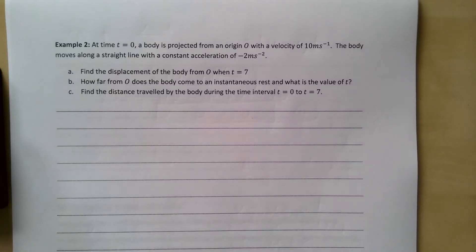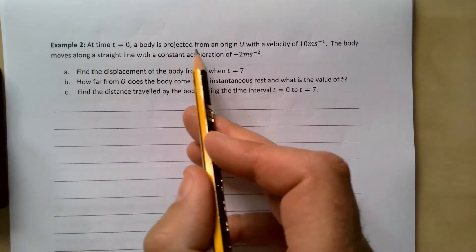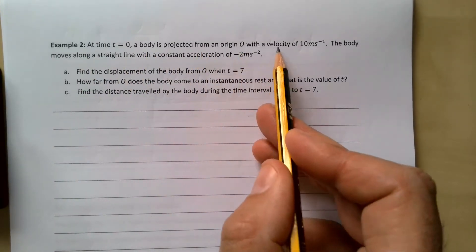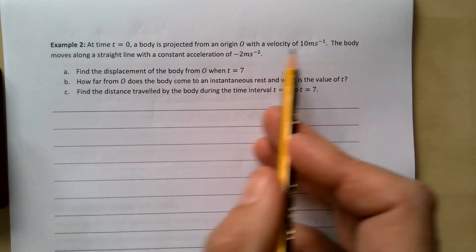This is example two of our constant acceleration questions. A little bit more complicated but we should be able to work it out. At time t equals zero, a body is projected from an origin with a velocity of 10 meters per second.